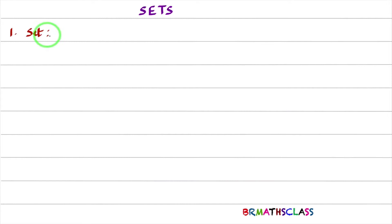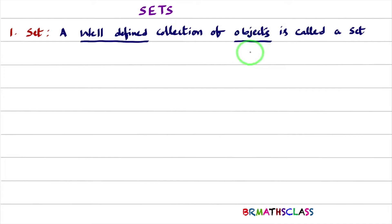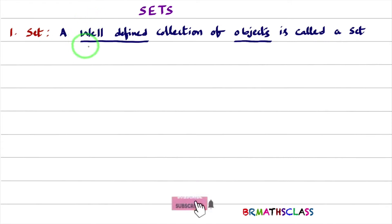The first point is: what is a set? A well-defined collection of objects is called a set. Here you need to observe two words — first one is 'well defined' and second one is 'objects.' In mathematical language, all things which are either living or non-living are known as objects. We will try to understand what is this well-defined collection with a few examples.